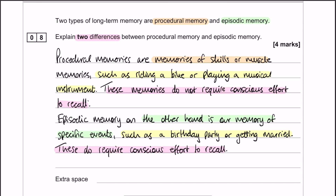Just because it's a full marker, I've added in a little bit of extra detail in the form of an example. For procedural memory, for example, riding a bike or playing a musical instrument, whereas episodic memory could be something like a birthday party or getting married. I've only put that in because it's a full marker, and because for full marks sometimes you just need a little bit more detail in your answer.